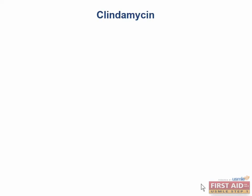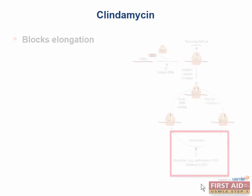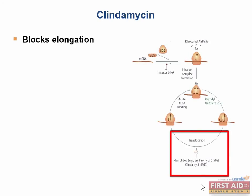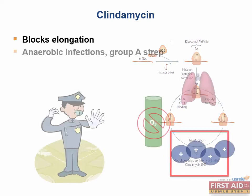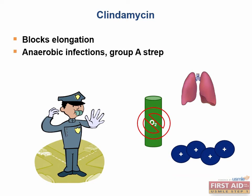Clindamycin is another drug that works on the 50S ribosomal subunit. It works by blocking the translocation or elongation of the polypeptide strand. This drug is bacteriostatic and is effective against anaerobic infections such as Bacteroides fragilis and Clostridium perfringens, as well as group A strep.